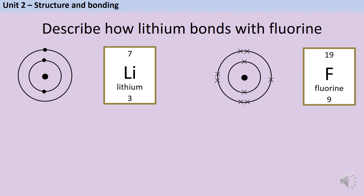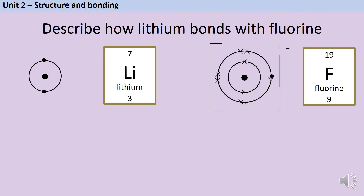Ions don't form in isolation — a lithium atom can't just make an ion and a fluorine atom can't just make an ion. What needs to happen is that a metal atom gives one or more electrons to a non-metal atom. Here we have our lithium atom with electrons as dots and our fluorine atom with electrons as crosses — this just helps us keep track of which electrons came from which element. In order to gain a full outer shell, the lithium atom donates one electron to the fluorine atom, which also needs one electron to complete its outer shell. The electron moves from lithium to fluorine, forming a negative fluoride ion shown with square brackets.